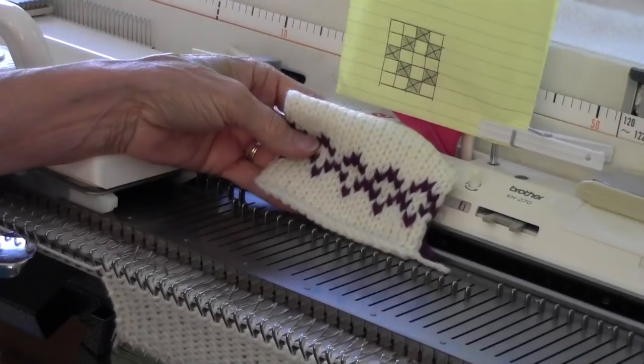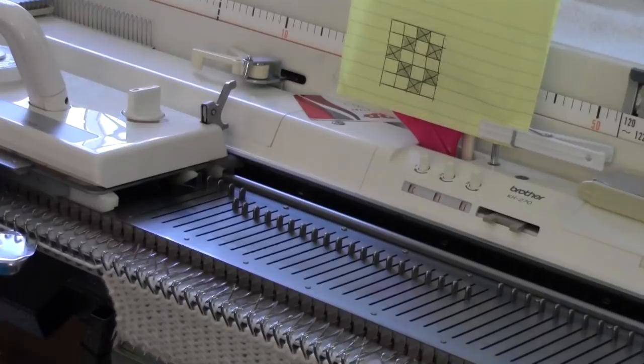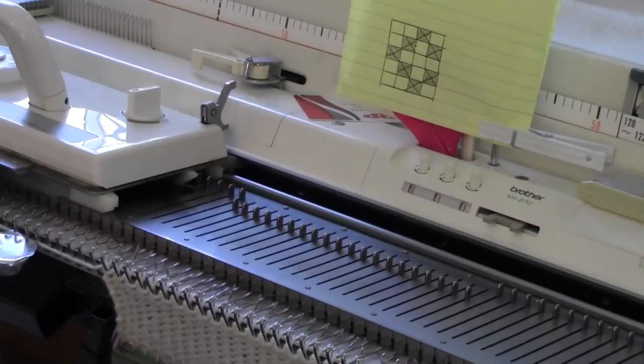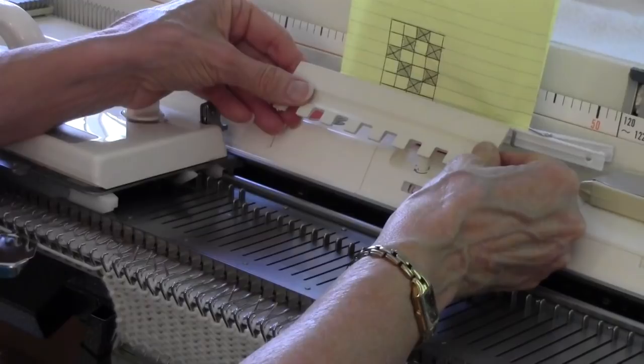So let's get started doing this the old-fashioned non-patterning way. My machine is threaded with the off-white yarn, and I've knitted a few rows plain in the off-white yarn. What I need to do is pick out needles for this first bottom row, and the first two stitches are going to be off-white, and then there'll be a purple, and then there'll be another off-white, and it repeats.